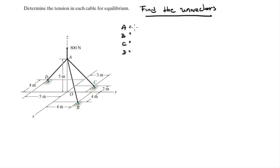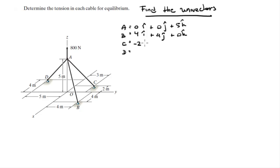A sits at 0i + 0j + 5k. B sits at 4i + 4j + 0k. C sits at -2i + 3j + 0k. And D sits at -4i - 5j + 0k.